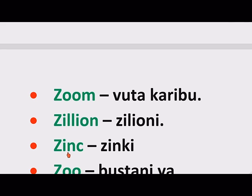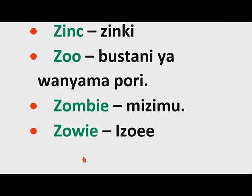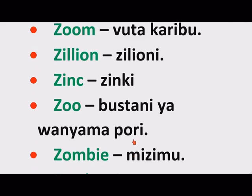Zinc — Zinki. Zoo — Bustani Ya Wanyamaporri. Zombie — Mizimu. Zowie — Izoe, meaning to get used to it. Did you find this video educative?